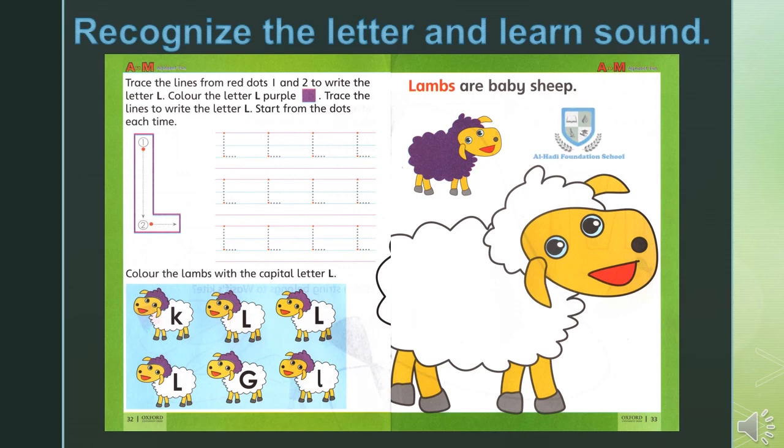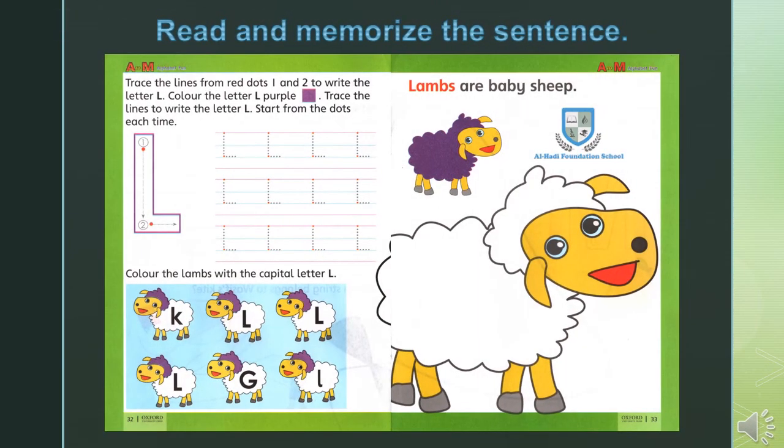Lamps. L. Lamps L. Now let's read the sentence. Lamps are baby sheep. Lamps are baby sheep.